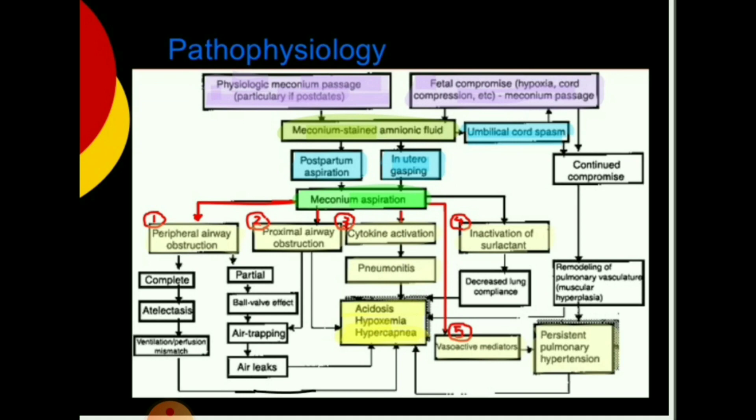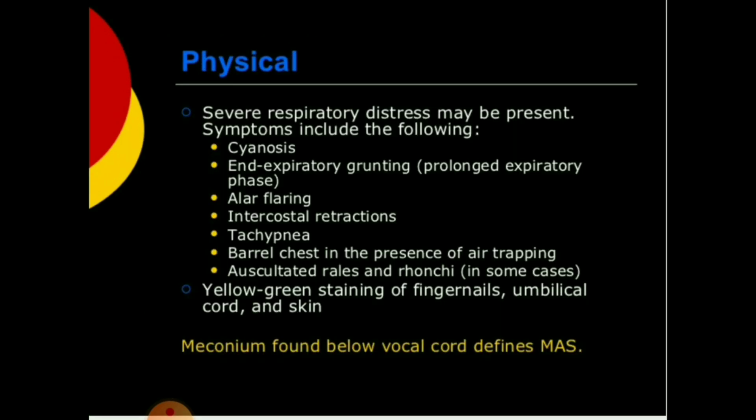Partial obstruction leads to air trapping and air leaks. Proximal airway obstruction results in acidosis, hypoxemia, and hypercapnia. Cytokine activation leads to pneumonitis. Inactivation of surfactant and vasoactive mediators contribute to persistent pulmonary hypertension.